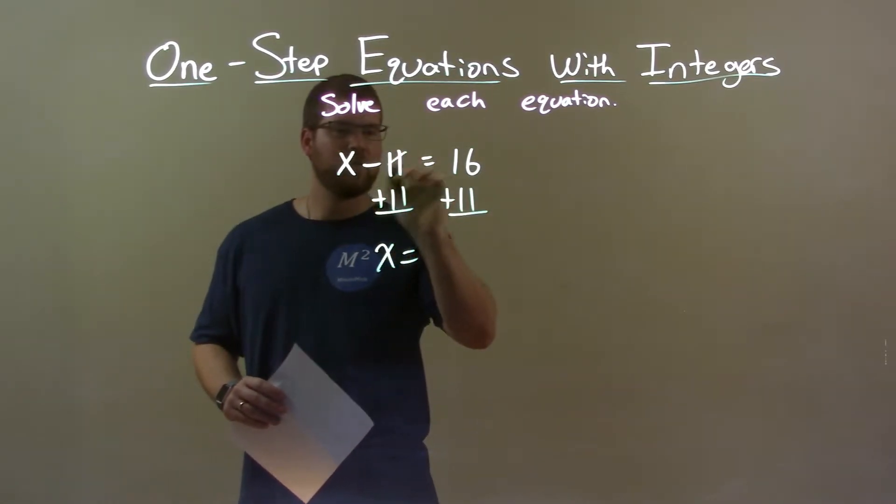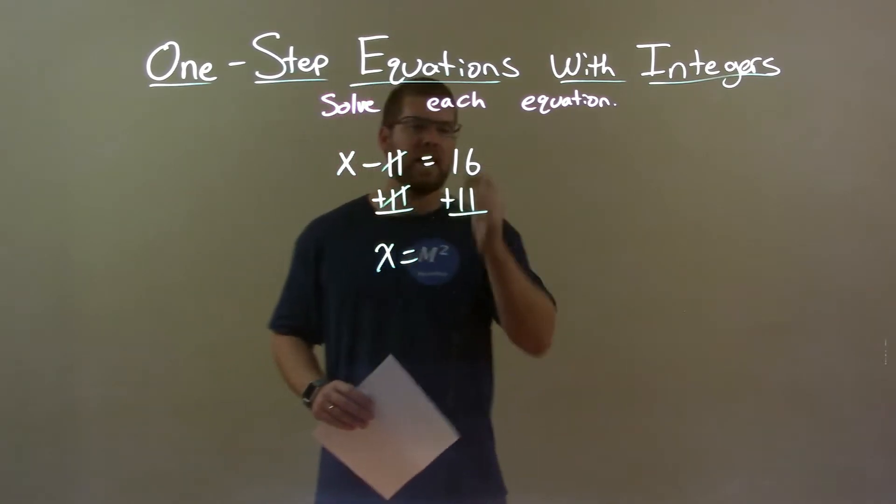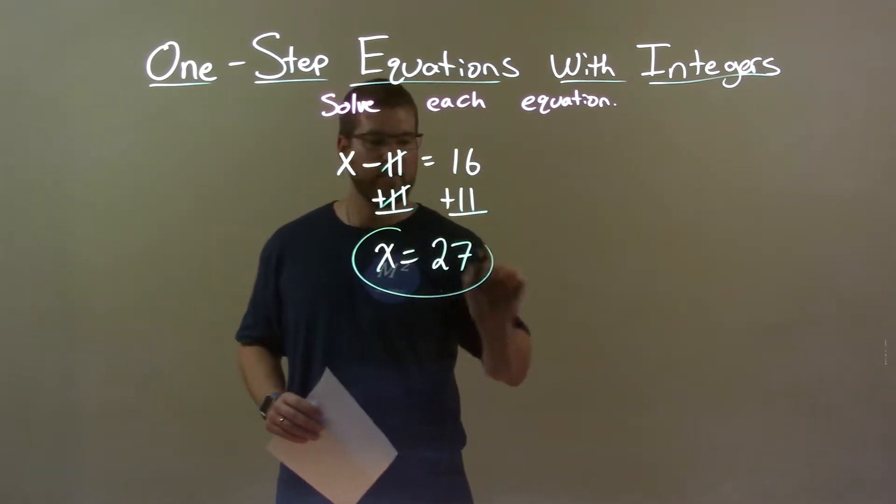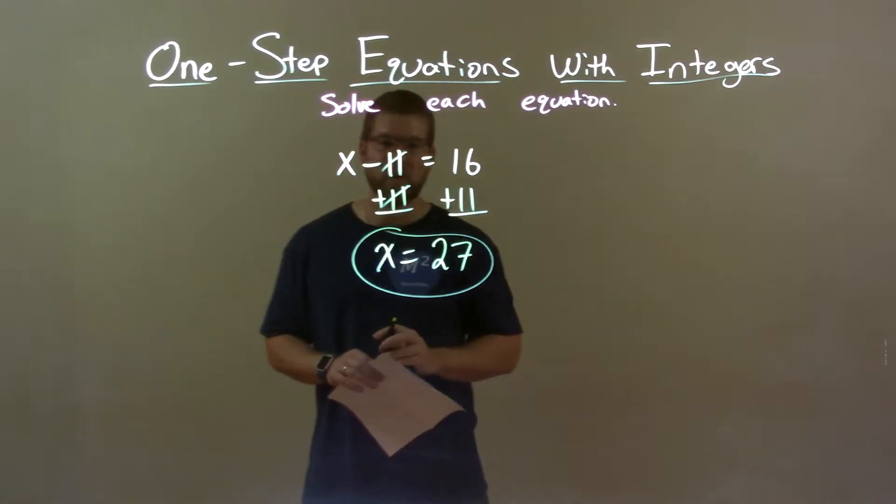This gives me x by itself because the 11's will cancel. Now I have 16 plus 11, which is 27. So now my final answer is just x equals 27.